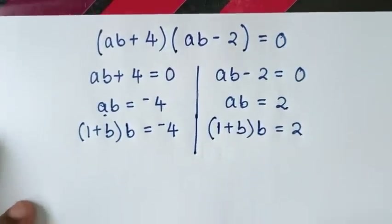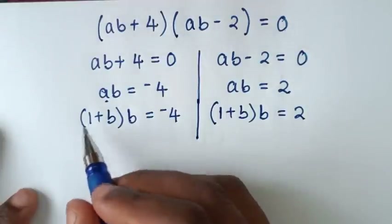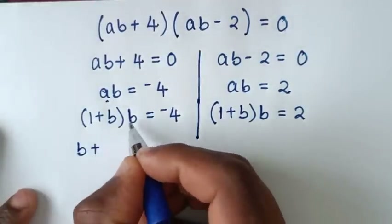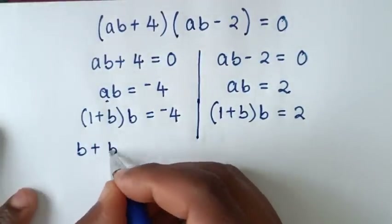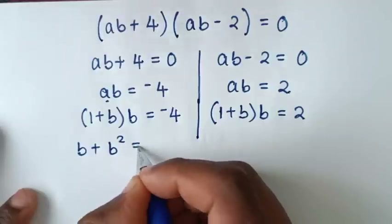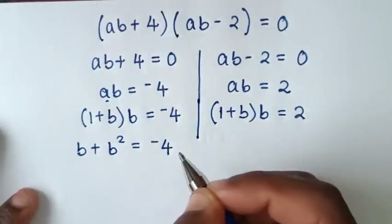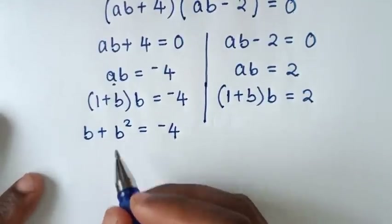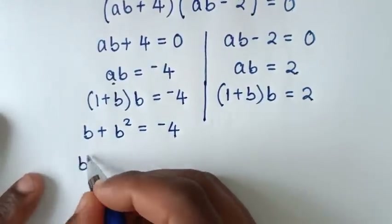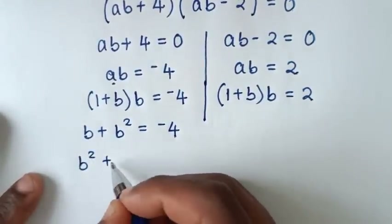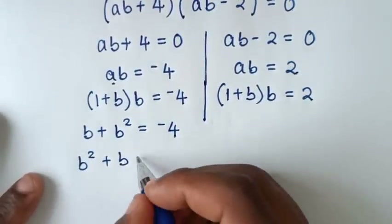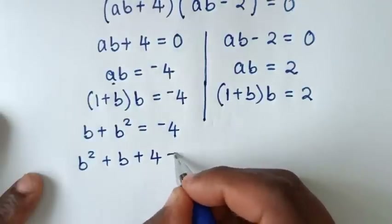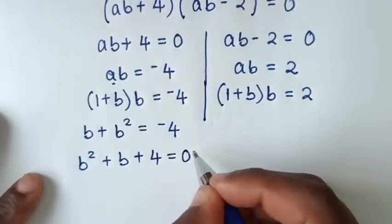Then from here, expanding: b×1 = b, plus b×b = b², equals -4. Then rearranging: b² + b + 4 = 0.